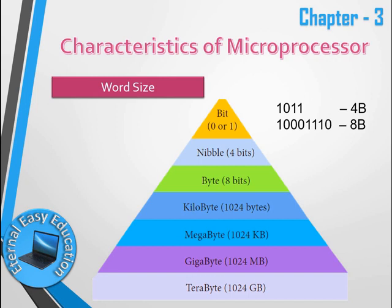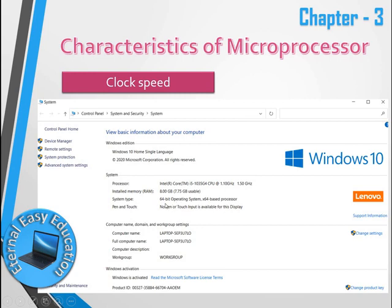The content stored in the CPU's memory unit is calculated using this table. When you buy a CD or pen drive, you see its capacity — for example, 1 GB or 32 GB — which is calculated based on bits. Similarly, the processor's performance is determined by word size. A 64-bit OS means the processor executes 64 bits in a single instruction.